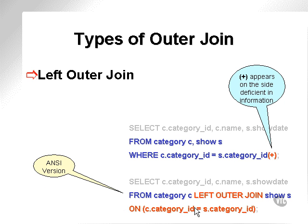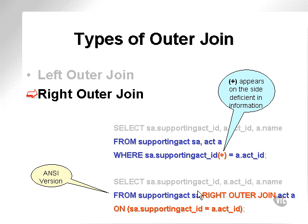It's important to note that I could have simply changed the order in which I retrieved from these tables in the left outer join example and called it a right outer join. I could simply have taken S dot category ID and placed it on the left and C category ID and placed it on the right. I could have done a similar thing with the ANSI form. But we'll stick to another example.